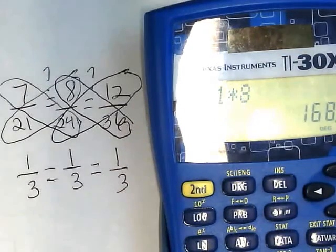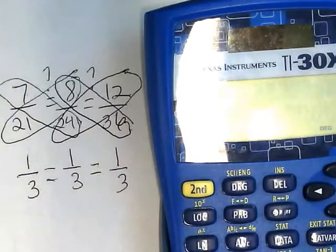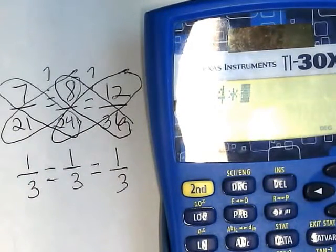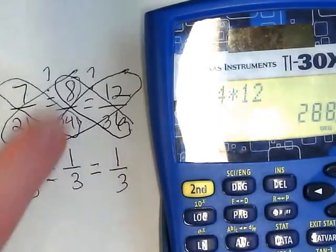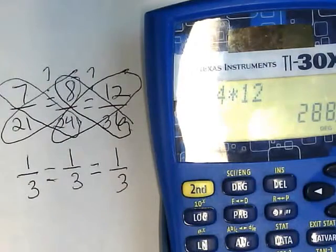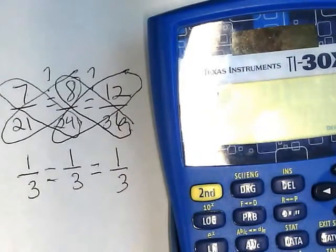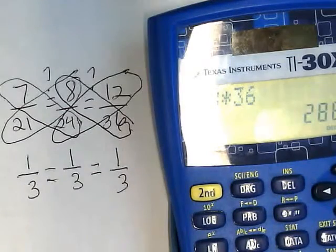But then I have to clear it and do the other set. I'm going to do 24 times 12. It doesn't have to be 168; it has to match 8 times 36. So 8 times 36, I get 288.